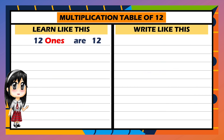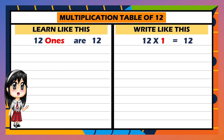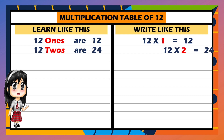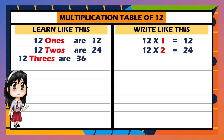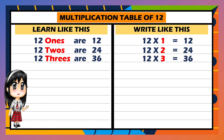12 ones are 12. 12 twos are 24. 12 threes are 36.